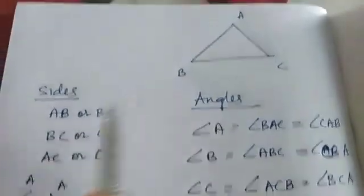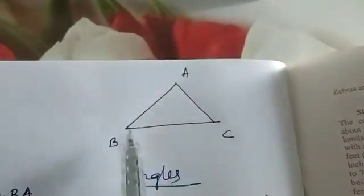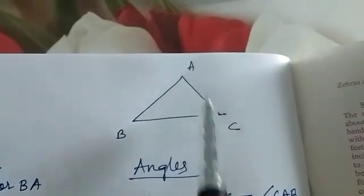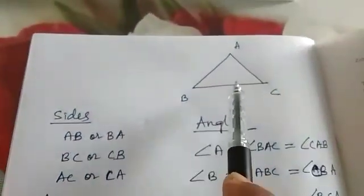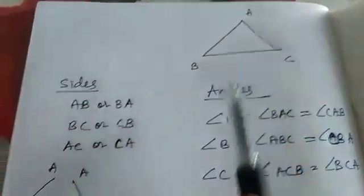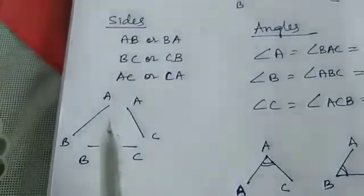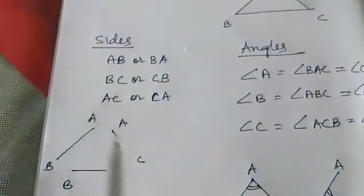A triangle has three sides and three angles. You can see three sides. This side you can name as AB, and the three sides are AB, BC, and AC.